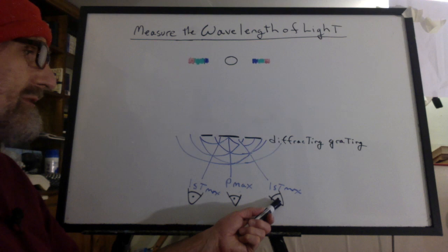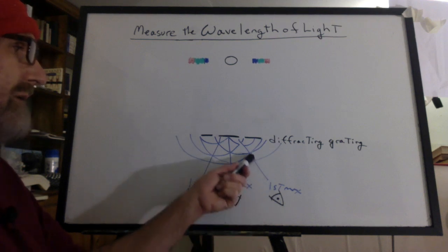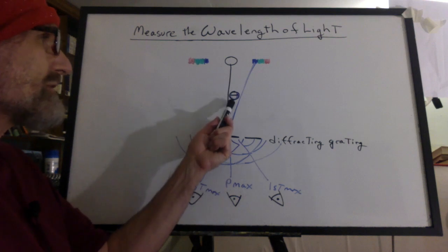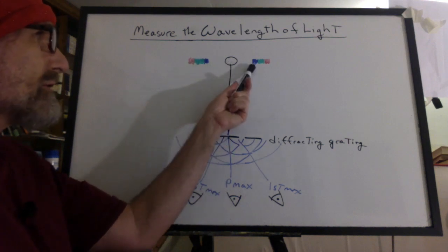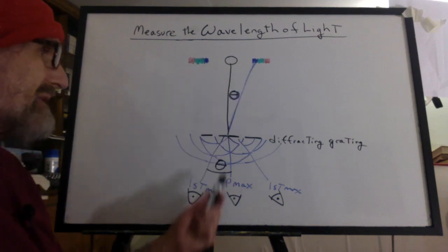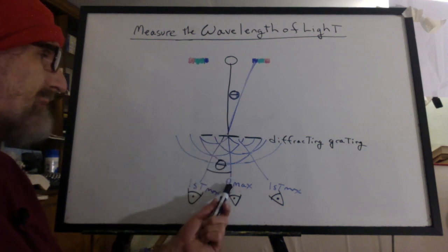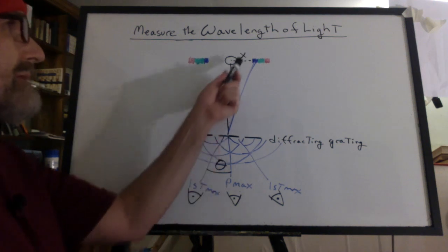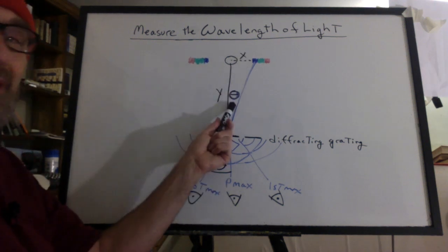And the same when I put my eye on this side and I look at an angle going down the first maximum, I see the blue light. So we need to measure the angle from the bulb over to the first blue light. That'll be the same as measuring the angle from the principal maximum over to where my eye is at the first maximum. So I can measure x and y and calculate theta.